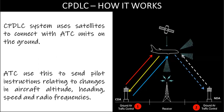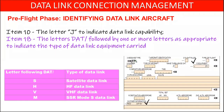Data link connection management: pre-flight phase. To identify or notify that an aircraft is capable of data link, the operator is responsible for inserting the following items in the ICAO flight plan. In item 10, equipment, the letter J is used to indicate data link capability.